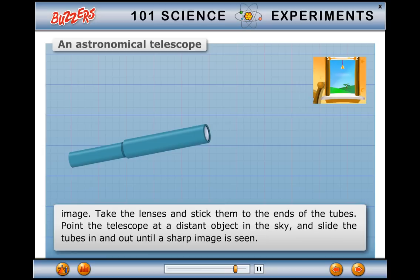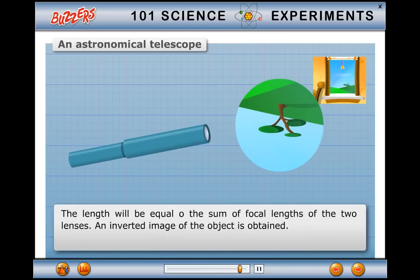Point the telescope at a distant object in the sky and slide the tubes in and out until a sharp image is seen. The length will be equal to the sum of the focal lengths of the two lenses. An inverted image of the object is obtained.